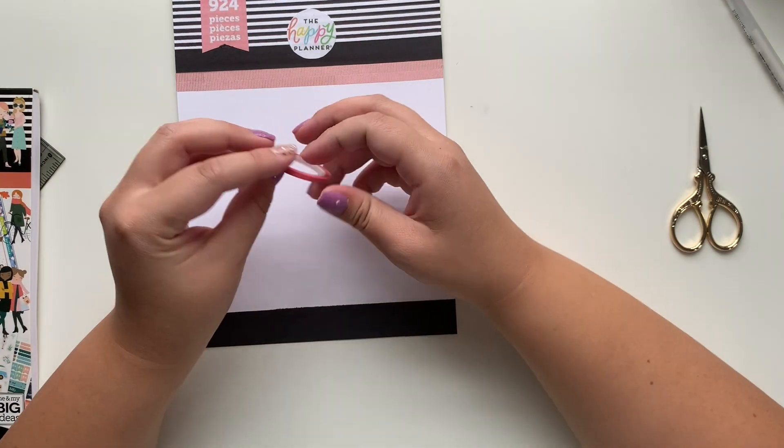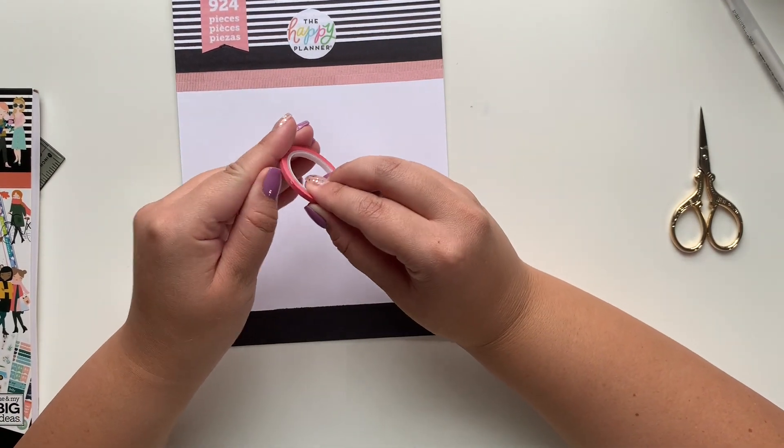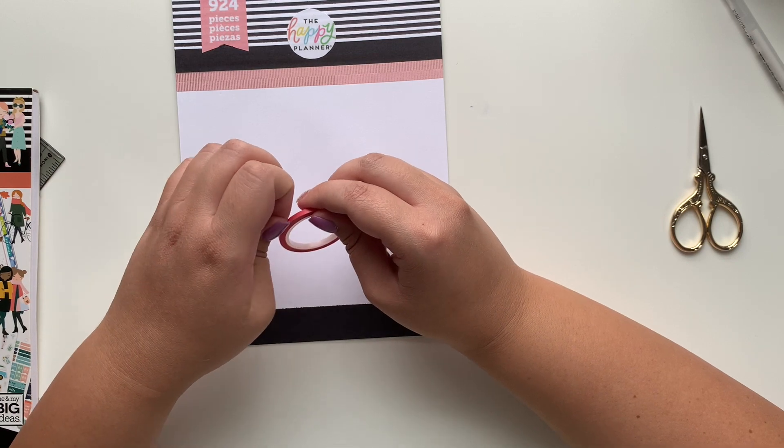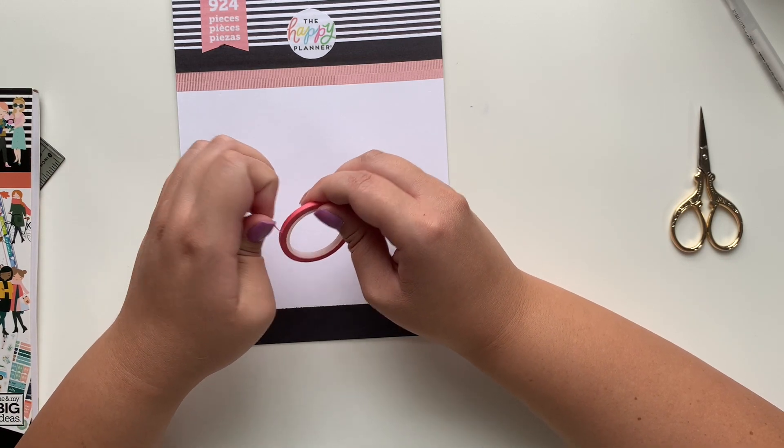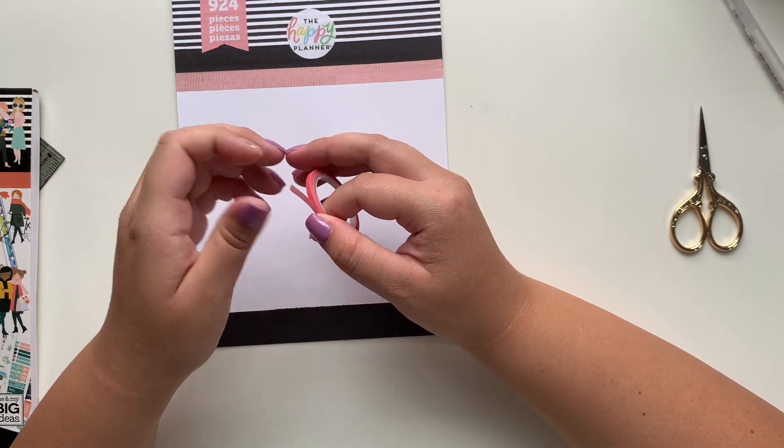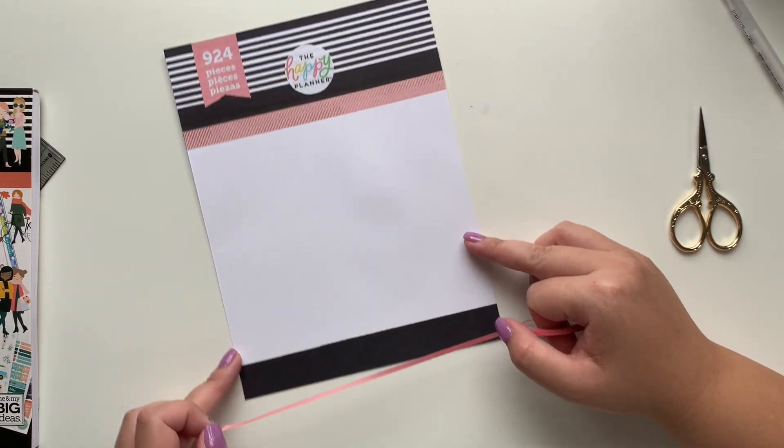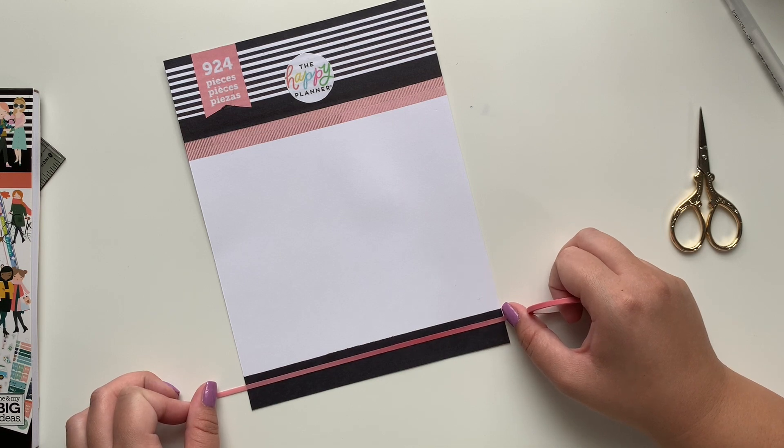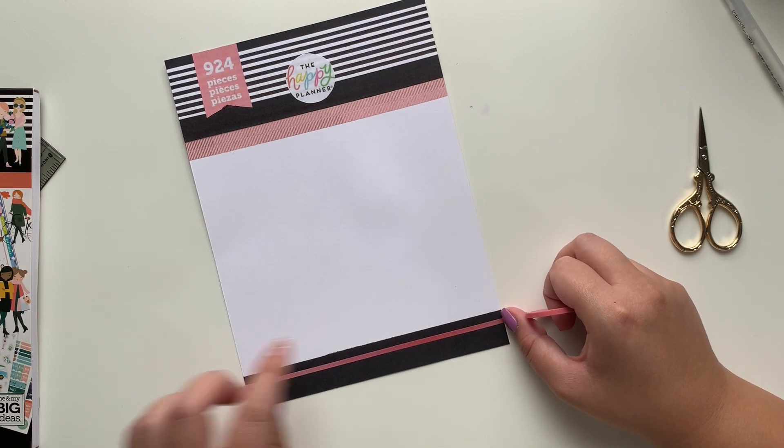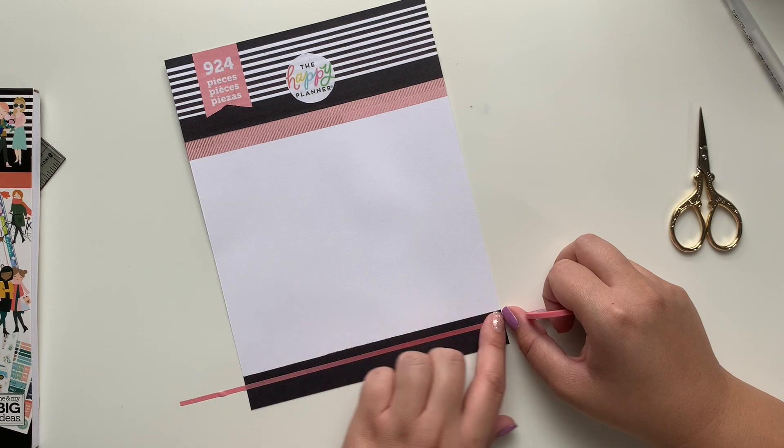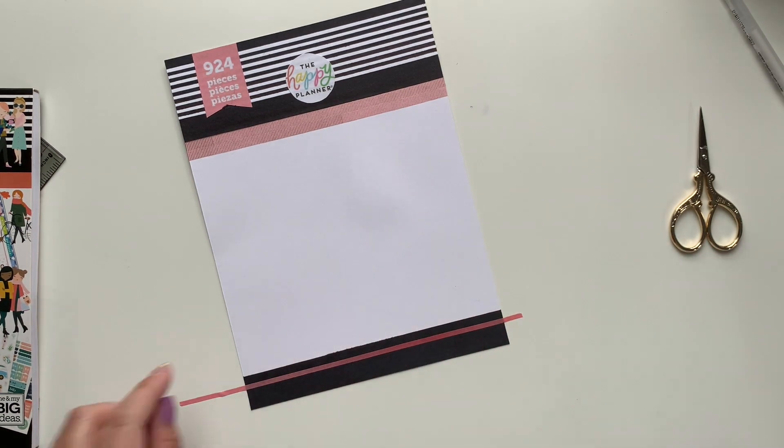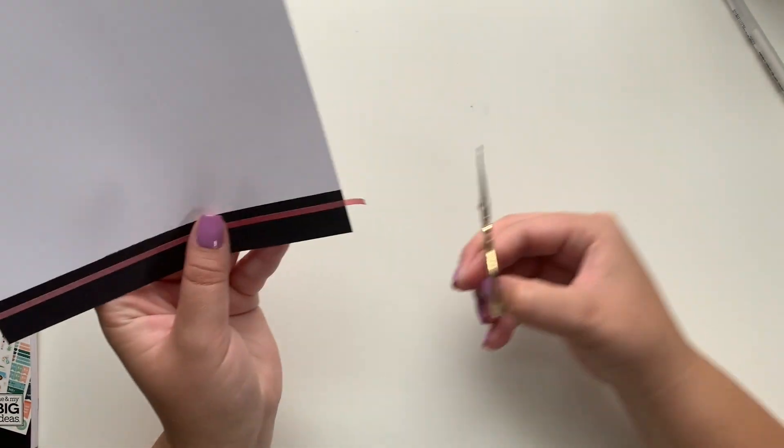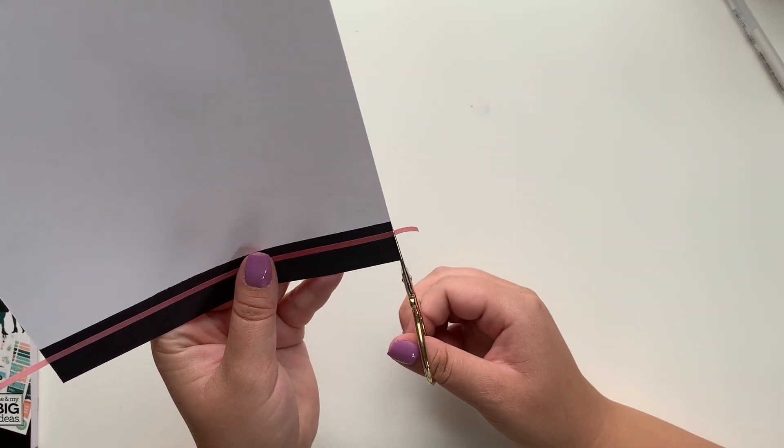Then you're just going to want to trim the edges, get all that washi, put away, and smooth every little bit you've got going on. Then this little piece of washi, this is why you needed two different types of washi, a thicker one and a thinner one. This thinner one is actually going to go on the bottom and act like our elastic that goes around the sticker books. This is just pretending to be elastic at the bottom. Then you're just going to want to trim those edges as well.